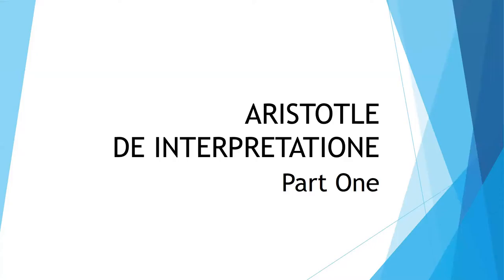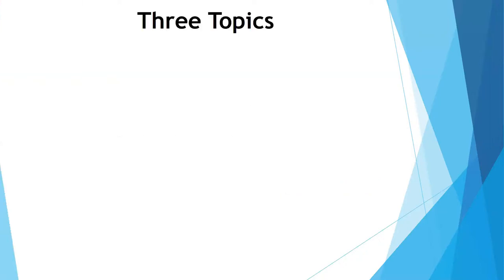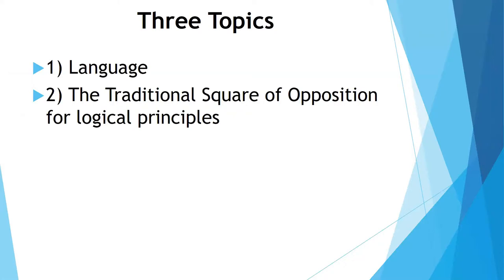This is the first part of Aristotle's text called De Interpretatione, and there are three topics covered in this material. Aristotle's approach to philosophy is very important here, and he takes a careful look at language — how we use our language. After that, he identifies how different sentences connect to one another logically, creating what is called the traditional square of opposition. He is laying down some of the foundations for logical principles that are still in effect today in many ways.